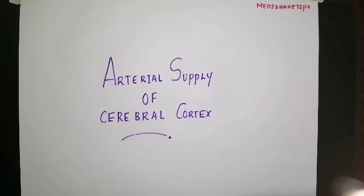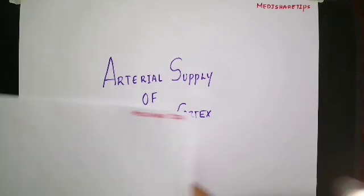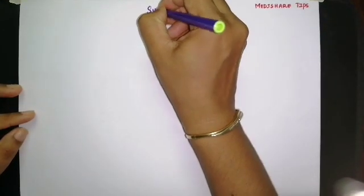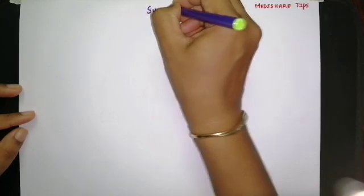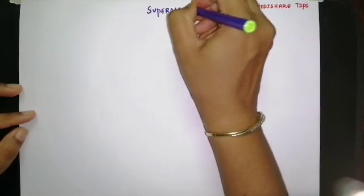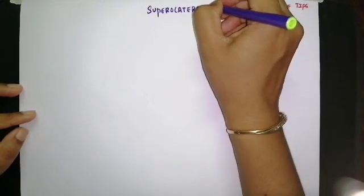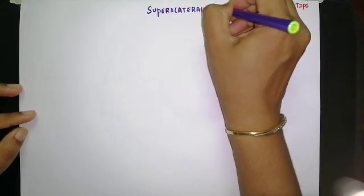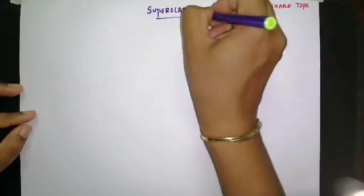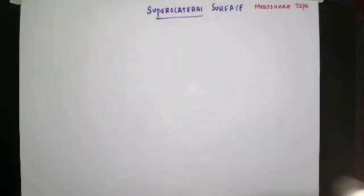In this video we are going to discuss about the arterial supply of the cerebral cortex of the brain. First we'll discuss about the arterial supply of the suprolateral surface. We will draw the diagram first.